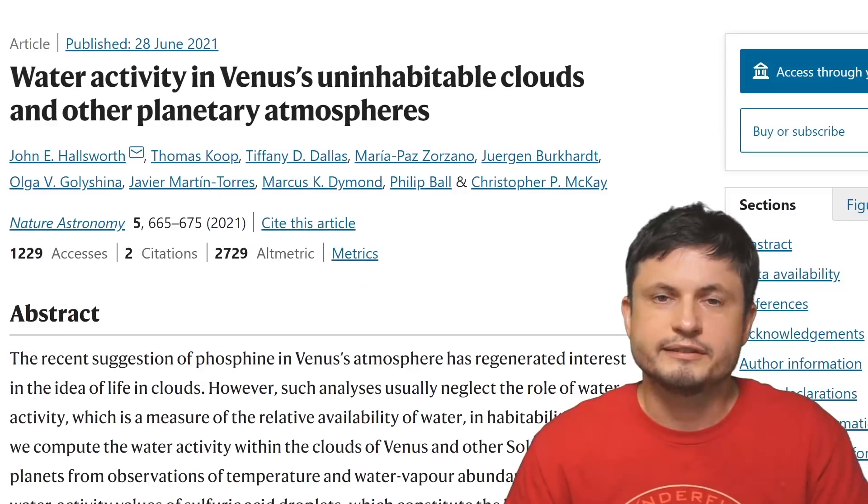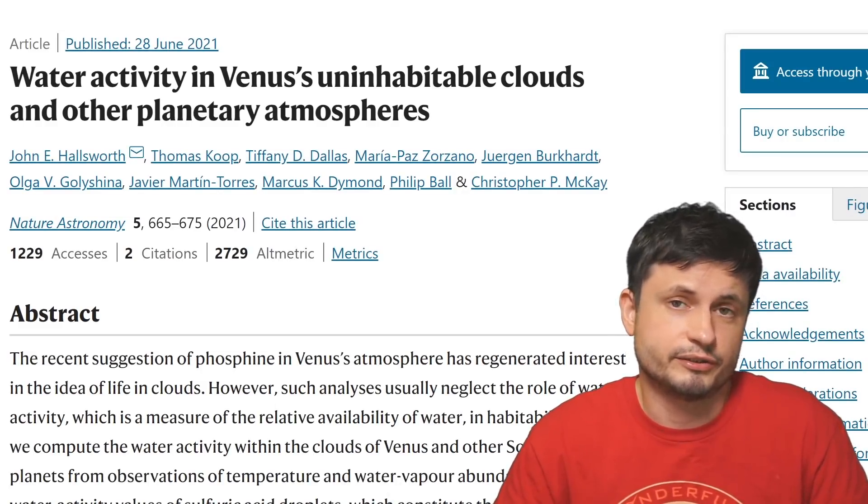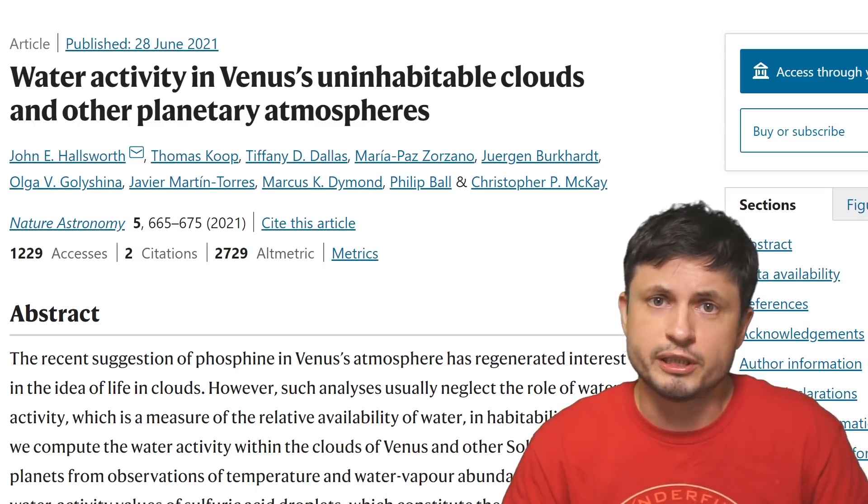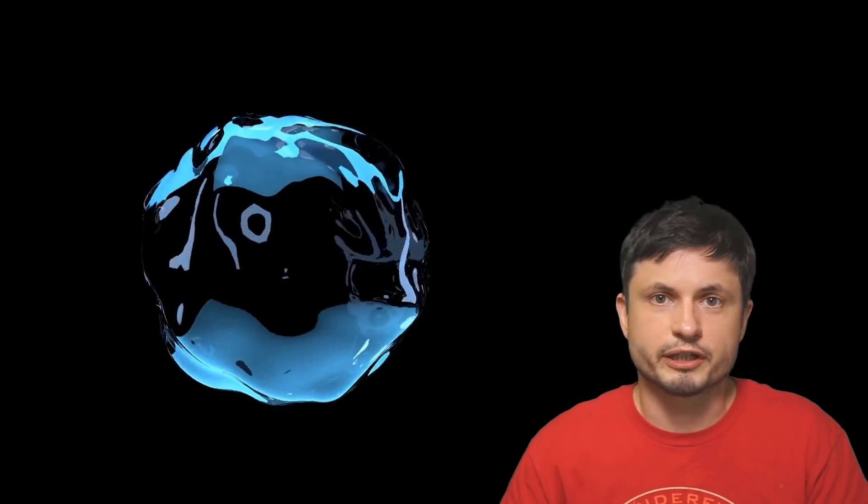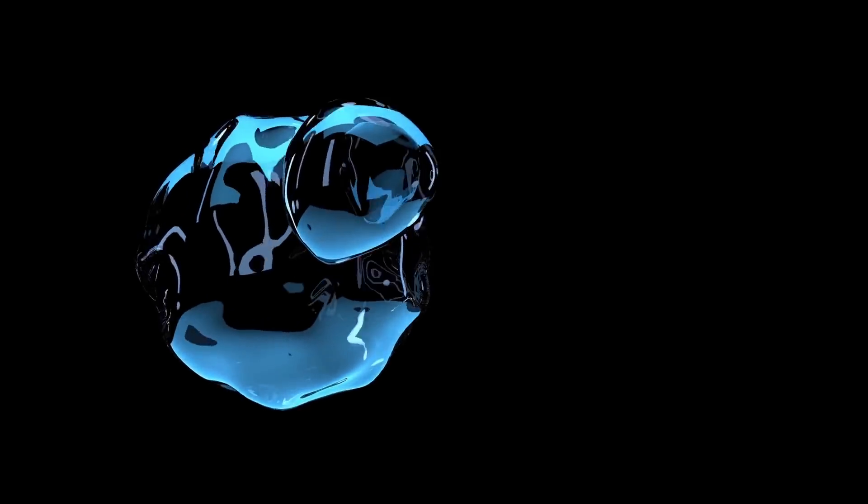However, for photosynthesis you also need things like water. And at least one very recent paper has already suggested that it's very likely that Venusian atmosphere just does not have enough water, and here we're talking about atmospheric water, to support any kind of bacterial life.